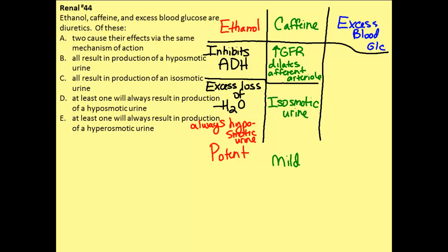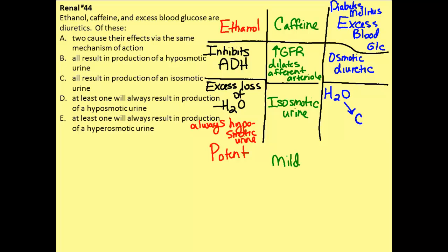The last situation is someone that has excess blood glucose, and we can assume this is probably someone that has diabetes mellitus. This is classified as an osmotic diuretic. There's excess glucose in the bloodstream that gets filtered, and the water is osmotically attracted to the glucose within the nephron. We exceed our ability to reabsorb that filtered glucose, which results in the production of an isoosmotic urine, because the water is attracted osmotically to the glucose still present in the urine.